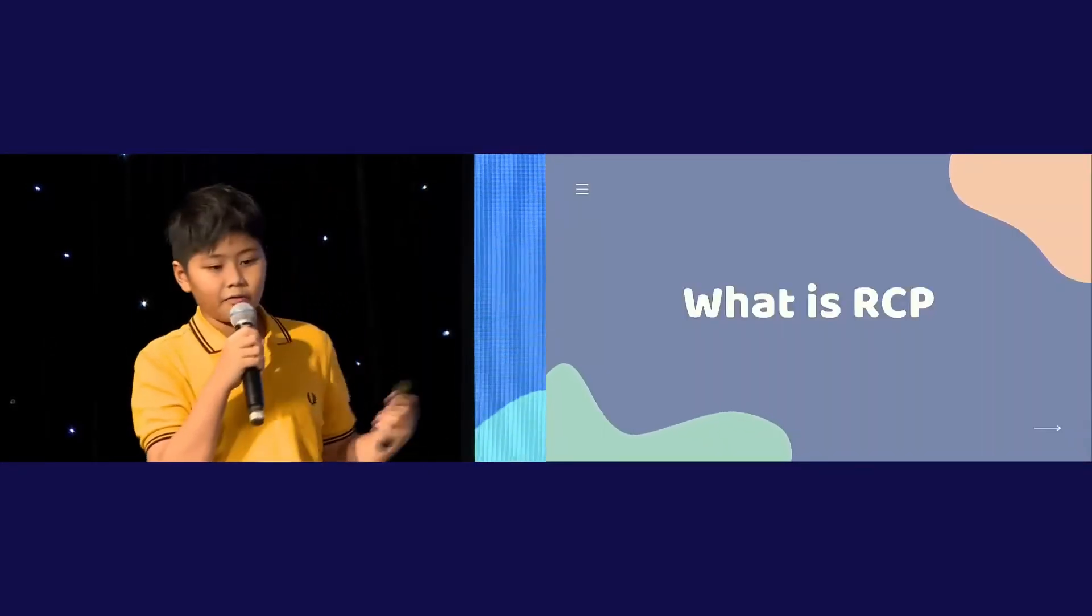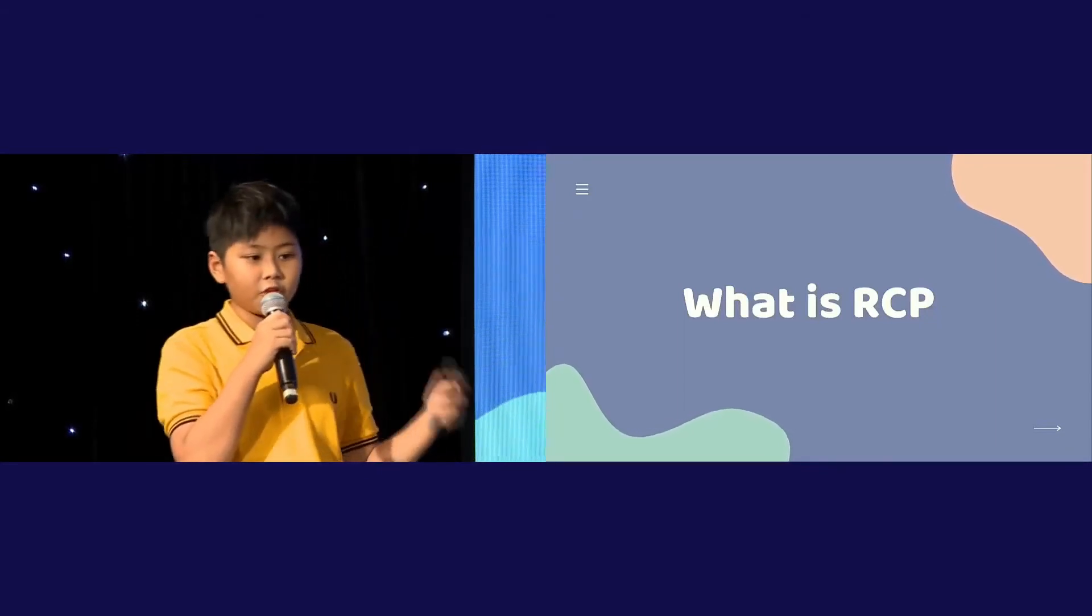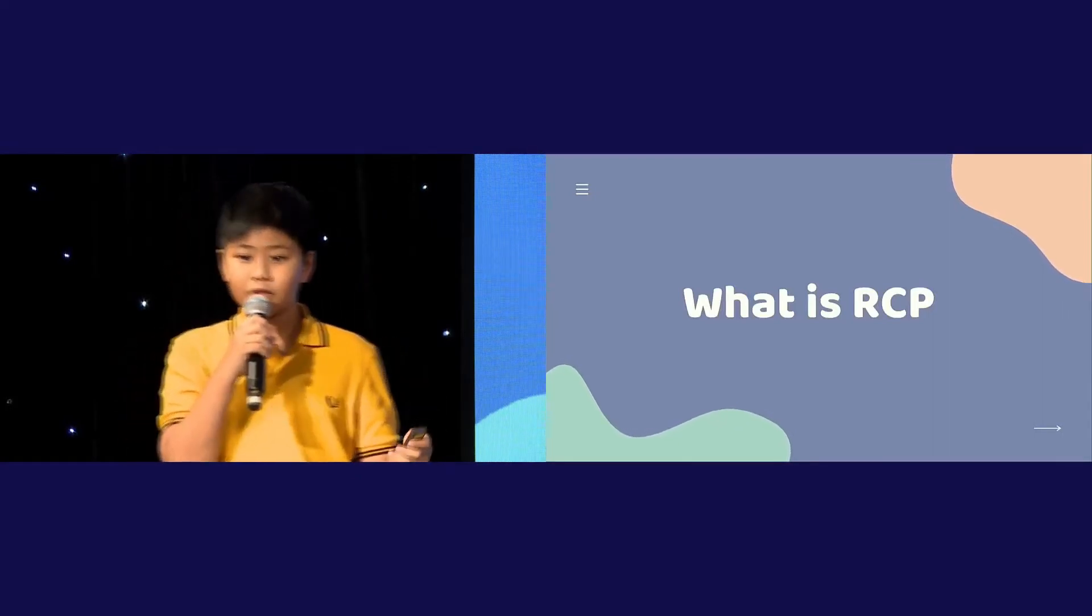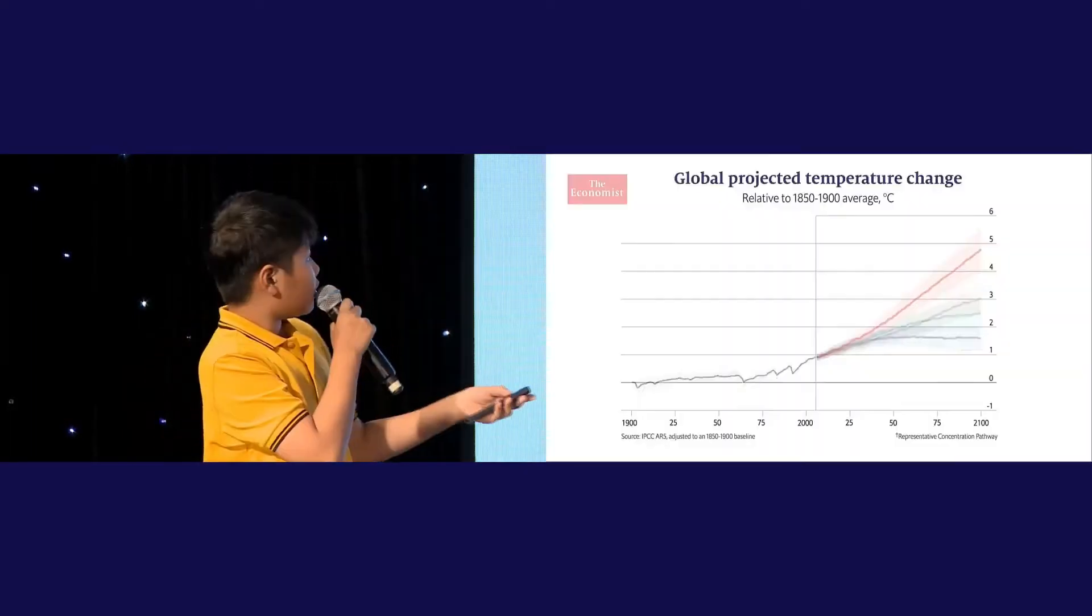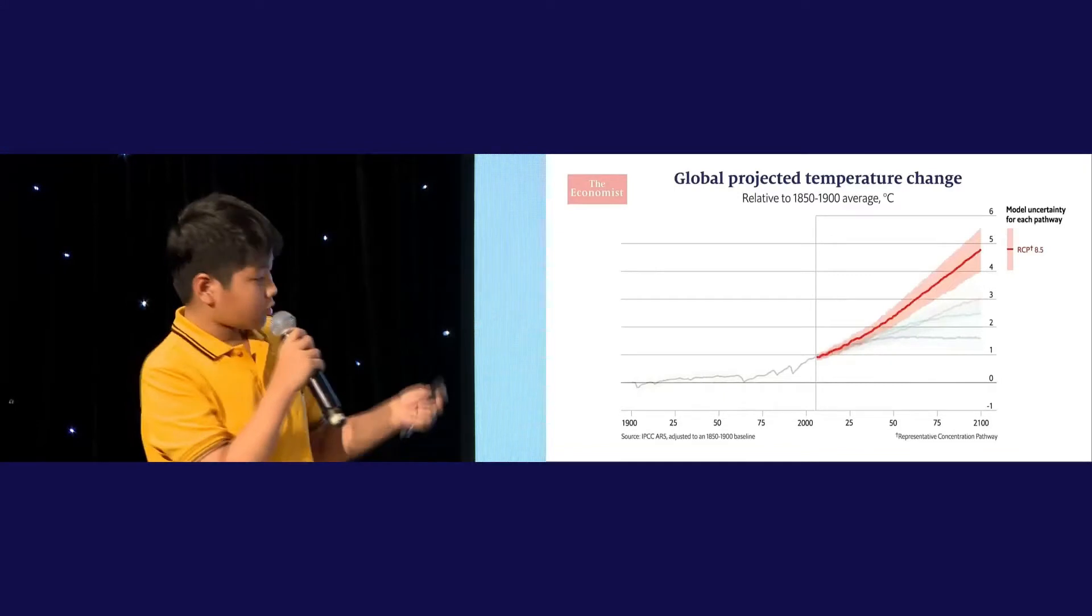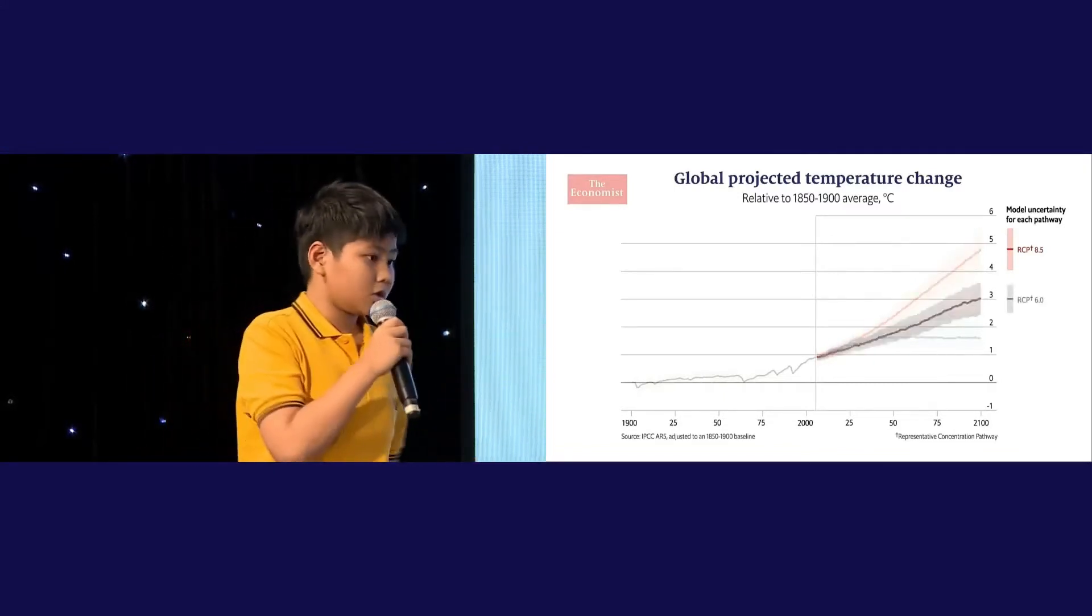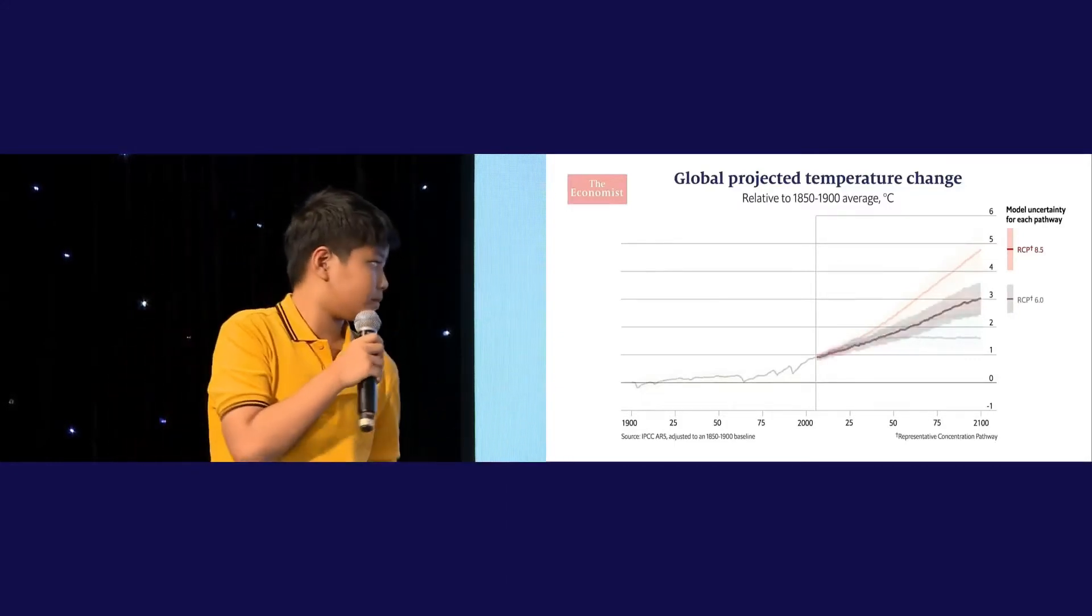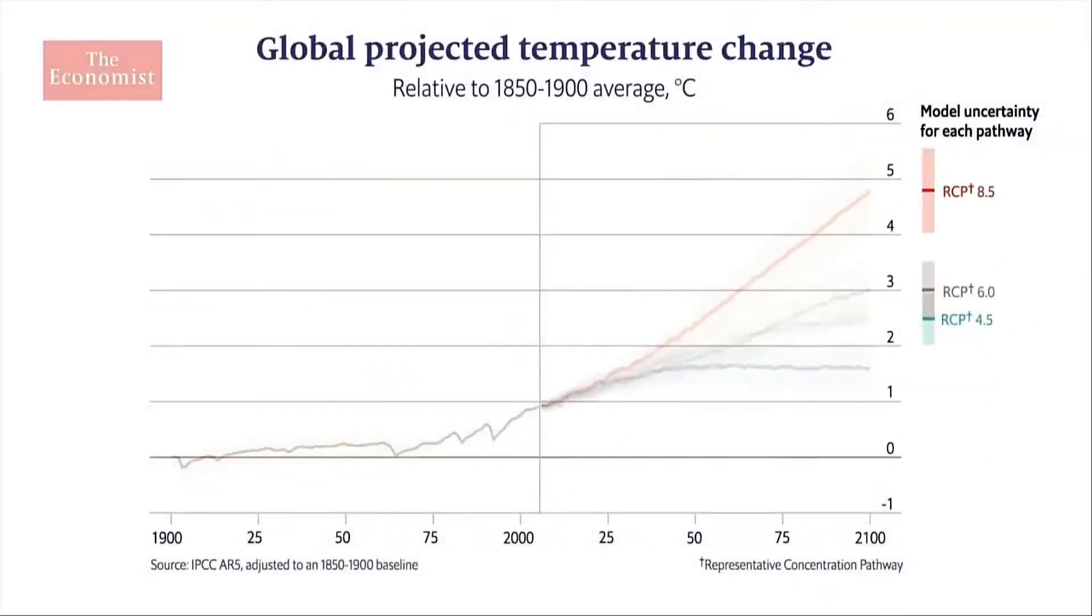RCP is the amount of energy that is trapped inside the atmosphere. RCP 8.5 refers to the concentration of carbon that delivers global warming and an average of 8.5 watts per square meter across the planet. RCP 8.5 will happen when there's a large scale of using coal. RCP 6.0 will take place when some of them still use renewable energy. RCP 4.5 will be reached when there's a lot of use of renewable energy.